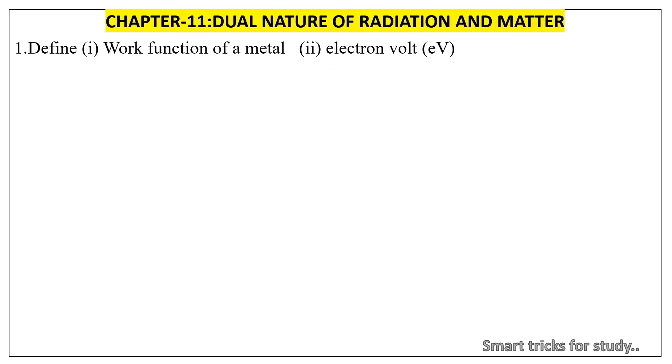Chapter 11, Dual Nature of Radiation and Matter. 1. Define: 1. Work Function of a Metal, 2. Electron Volt, 3. Threshold Frequency, 4. Stopping Potential, 5. Photoelectric Emission.